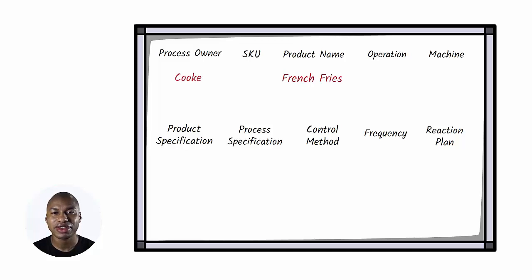Process owner: cooker. Operation: frying. Machine: fryer. Product specification: well done fries. Process specification: oil temperature between 160 and 180 degrees Celsius. Control method: the temperature reading on the fryer.